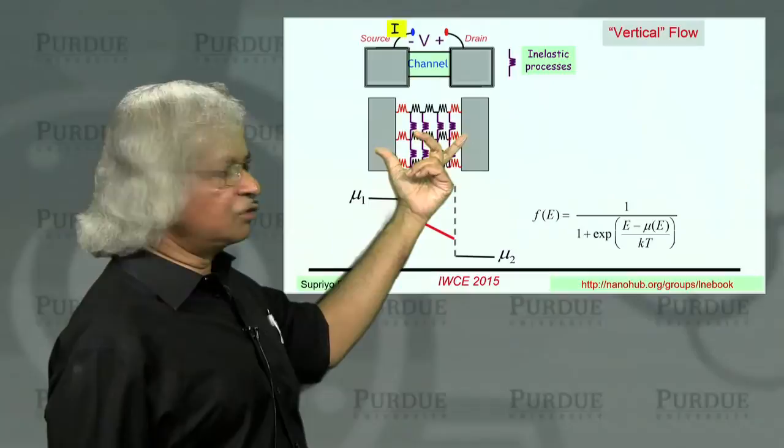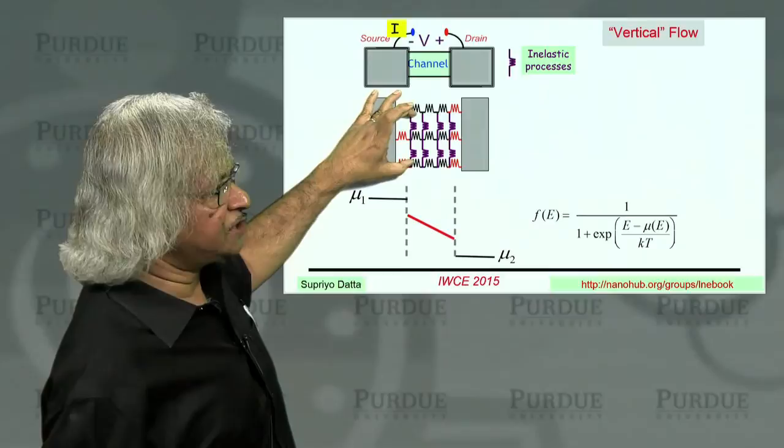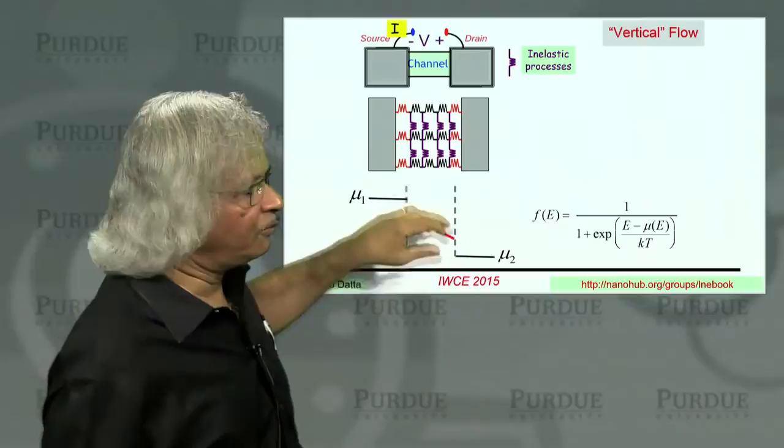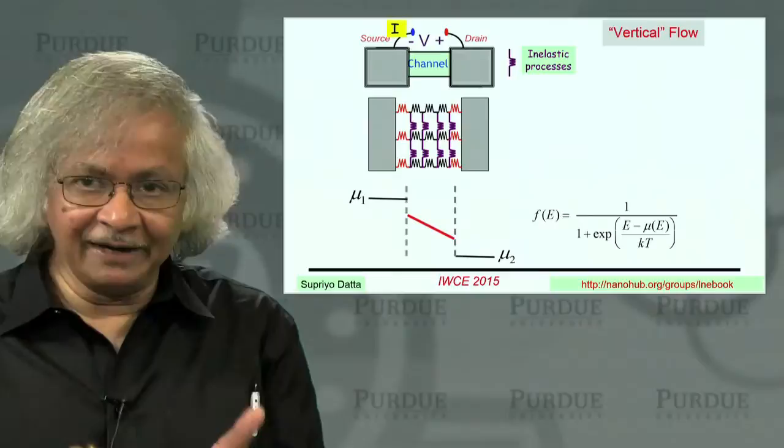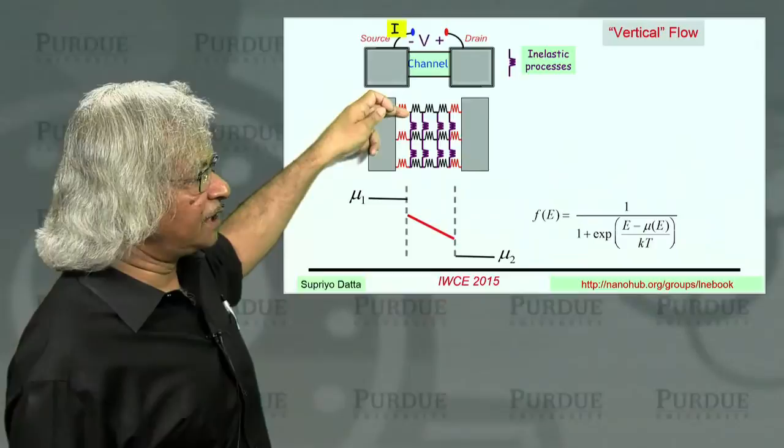So usually, when you have a device with two contacts, uniform contacts, and low bias, so the energy range of interest is relatively small, the point is each channel conducts roughly the same way. These mu's are all the same. So whether you included the inelastic process or not makes no big difference to the overall resistance. It, of course, makes a difference to where the heat is generated, et cetera, but no difference overall to the current flow because there's no vertical flow.